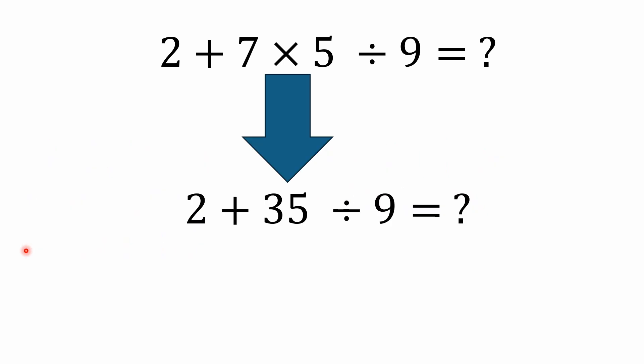Now multiplication and division also have precedence over addition and subtraction. So as we're working through this you're going to take the 7 × 5 to start with and that of course gives you 35 here on the second line.